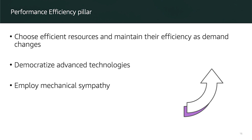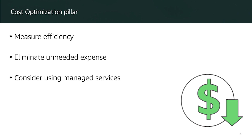In the performance efficiency pillar, we want to choose efficient resources and maintain their efficiency as demand changes, employ advanced technologies, and also employ mechanical sympathy. In cost optimization, we want to measure the efficiency of our system and software, eliminate unneeded expenses, and consider using managed services over self-managed services.